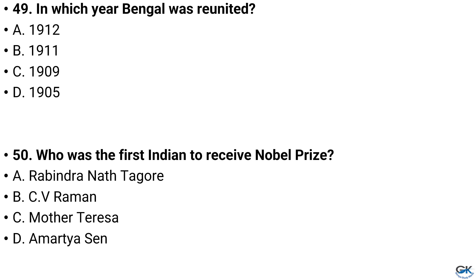Question number 49. In which year was Bengal reunited? Option A: 1912, Option B: 1911, Option C: 1909, Option D: 1905. And the answer is Option B: 1911.